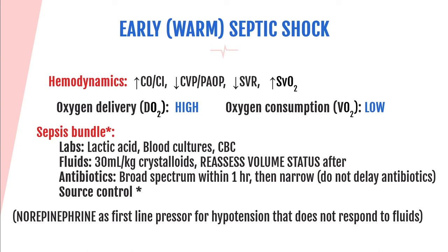Question number eight: which medications are most often prescribed for anaphylaxis after initial therapy with IM epinephrine? A: antihistamines and corticosteroids, B: vasopressors and inotropes, C: antihistamines and antibiotics, or D: corticosteroids and vasopressors? The answer is A. An antihistamine will help halt the allergic response, and a corticosteroid will help halt the inflammatory response. Vasopressors, inotropes, and antibiotics are not helpful for anaphylactic shock.